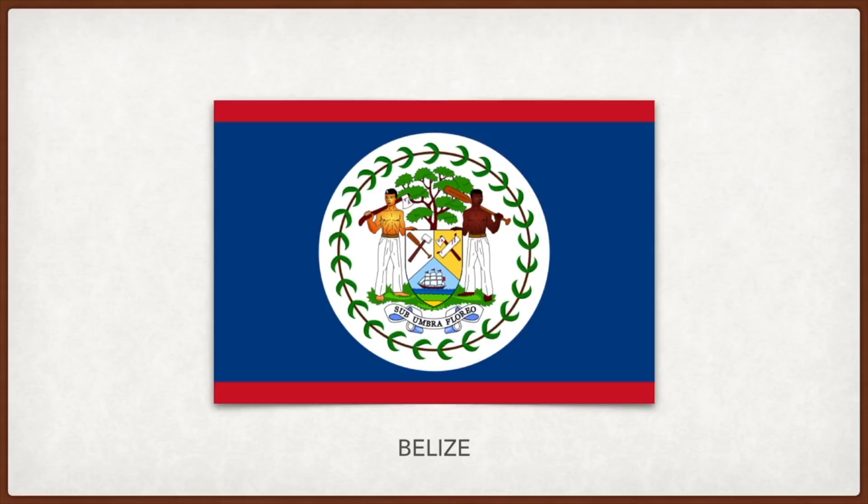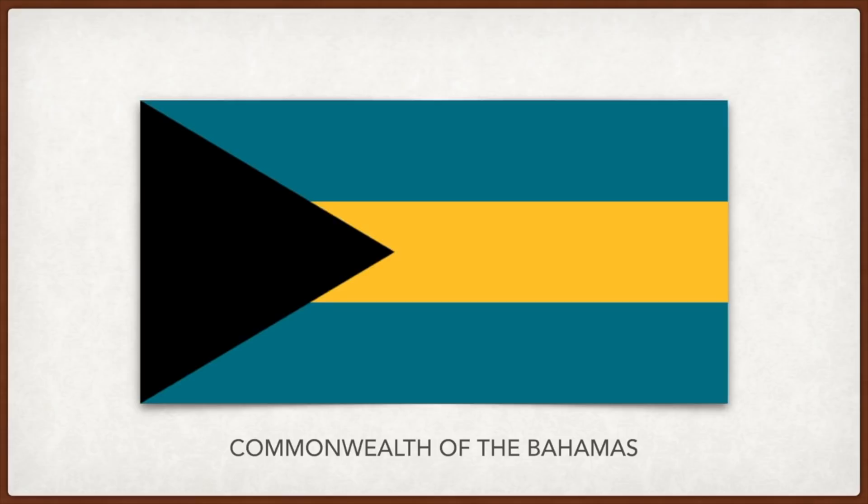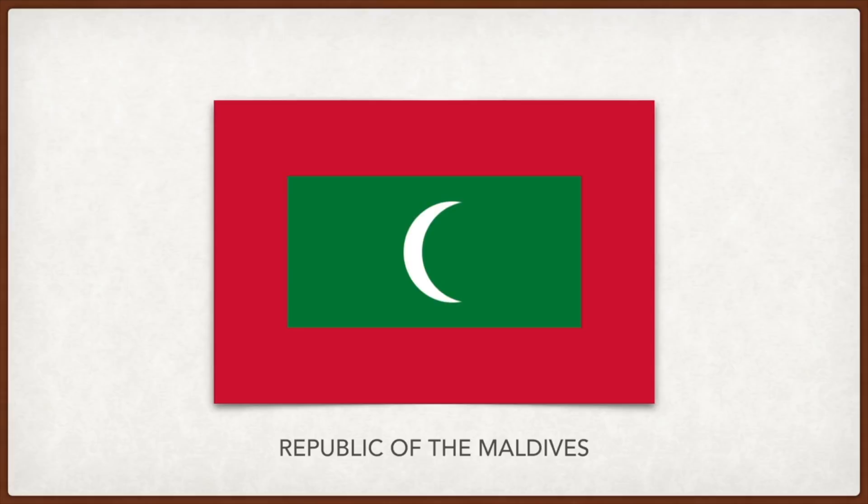The Bahamas: the two aquamarine stripes represent the water surrounding the islands, the yellow stripe represents the sand and other land resources, and the black triangle represents the people and their strength. The Maldives: the green rectangle with the crescent represents the nation's religion Islam as well as progress, prosperity, and peace; the red border is a reminder of heroes who sacrificed themselves for the country.